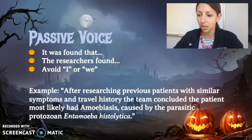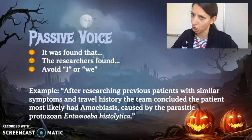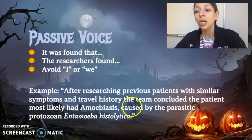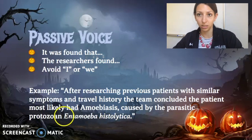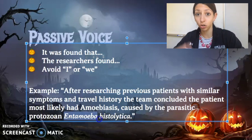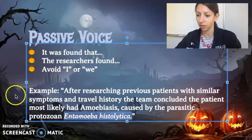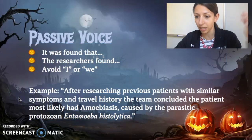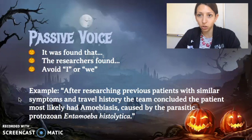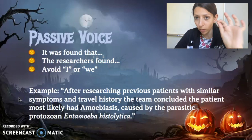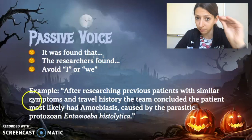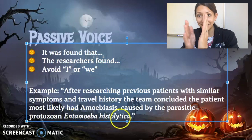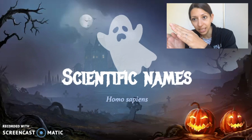That brings me to the next important thing in science: scientific names. Every living organism is given a scientific name — two words made up of the genus and the species. For this amoeba, it's Entamoeba histolytica. It's written in a special way, and it's always written this way especially when you type: italicized.